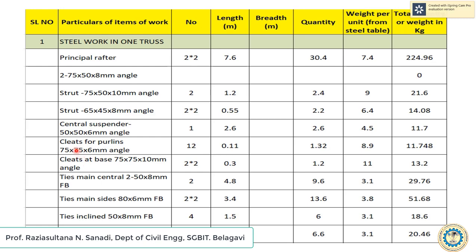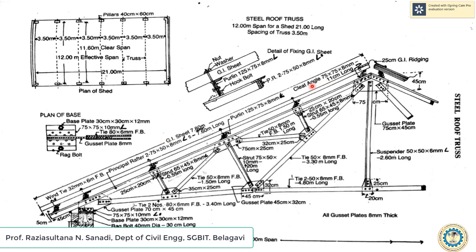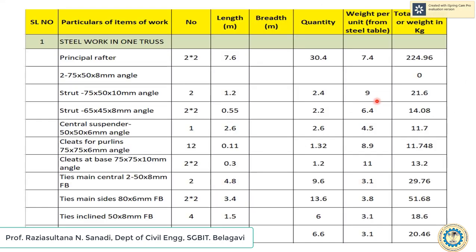Next are cleats for purlins — angle section 75 x 75 x 6 mm, each 11 cm long. Counting the cleat angles: there are 6 at each side of the truss, giving 12 total for both sides. With 12 numbers at 0.11 m, quantity is 1.32. Multiplying by weight per unit from the steel table gives a total quantity of 11.748 kg.